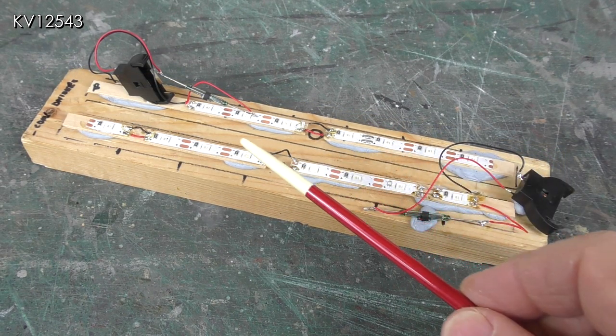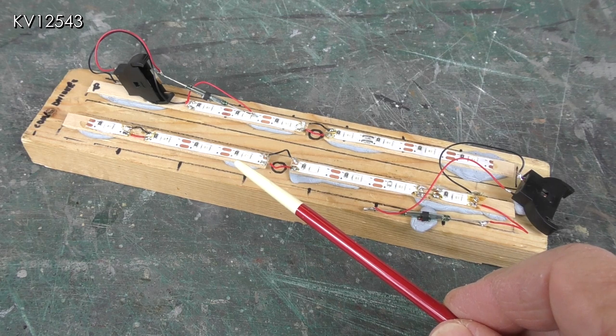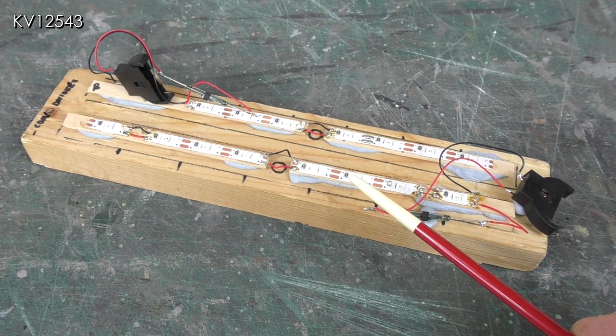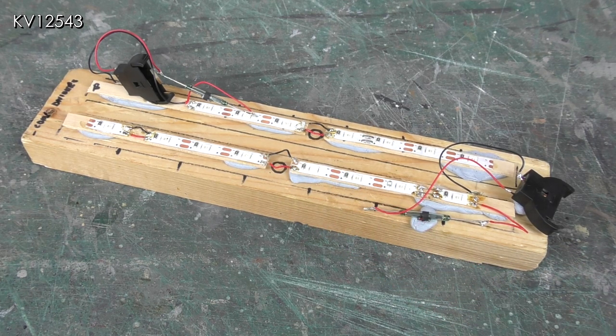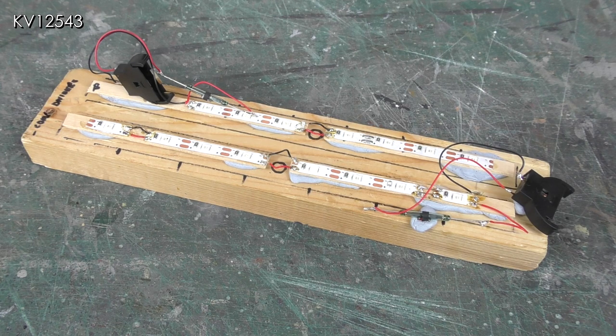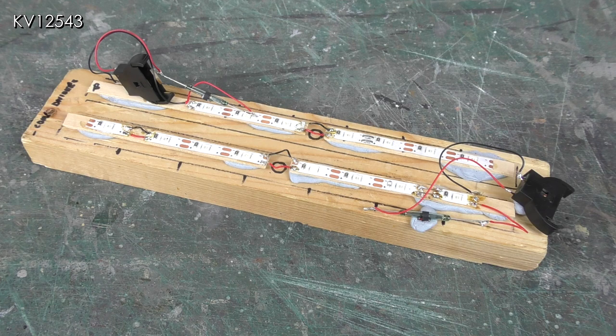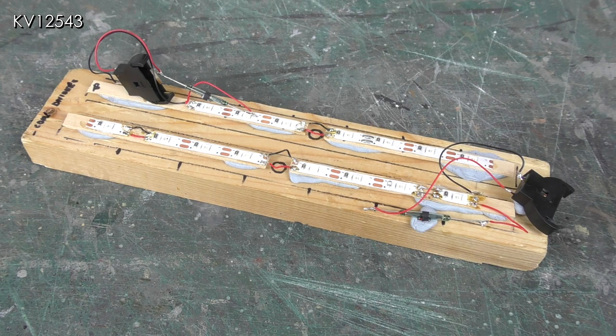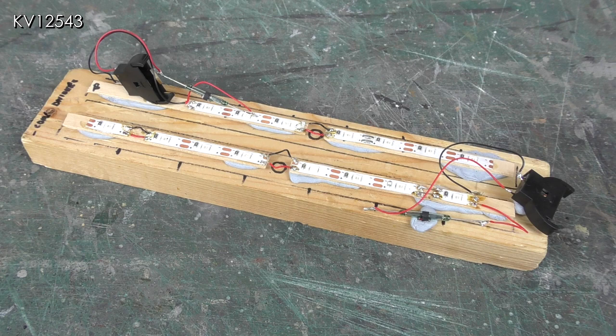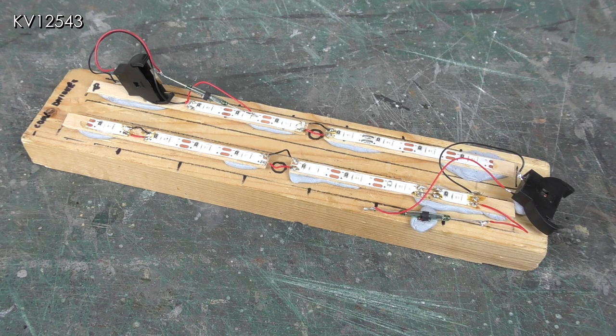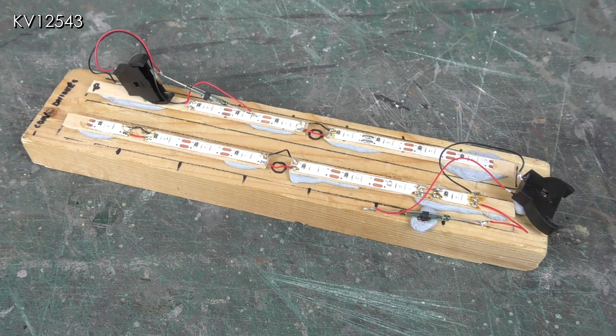The second lighting rig has now been constructed. This one is for the 7 compartment composite first coach. I mentioned earlier the need to cut the LED strip as supplied to fit my particular coaches and this strip better shows what I meant.